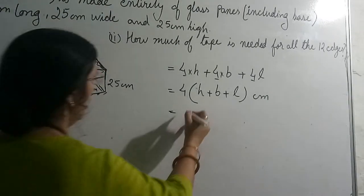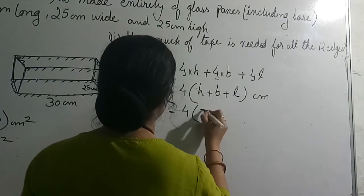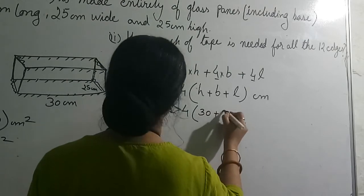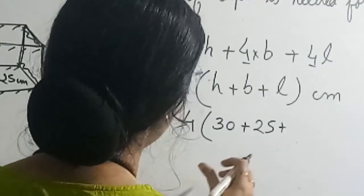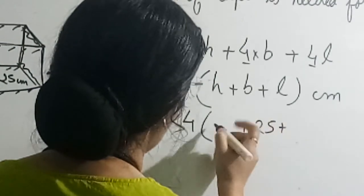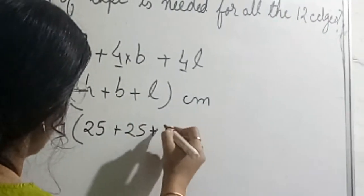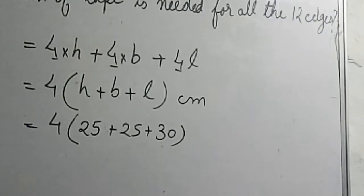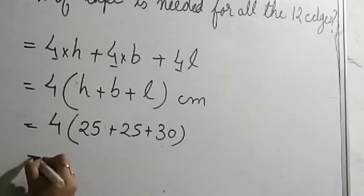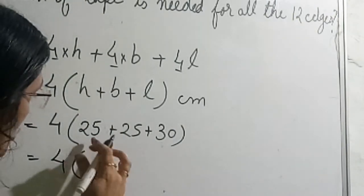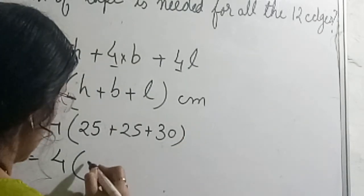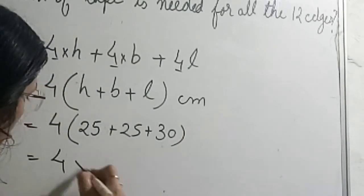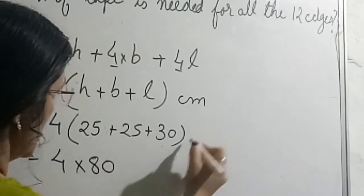Now I will put the value: 4 into height is 25, plus breadth is 25, plus length is 30. So what we are going to do? 4 times (25 plus 25 plus 30). 25 plus 25 is 50, 50 plus 30 is 80. So it will be 80 centimeter.